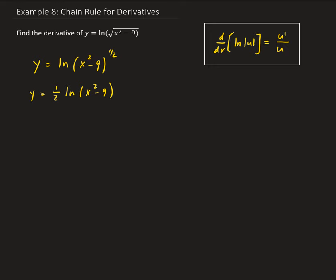If we have something like natural log of a to b, this is the same as b times the natural log of a.